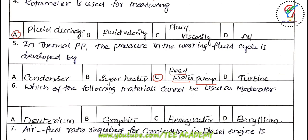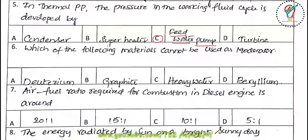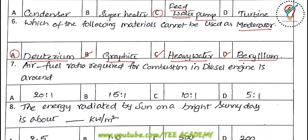Sixth question: which of the following materials cannot be used as a moderator? The options are deuterium, graphite, heavy water, and beryllium. The correct answer is deuterium — meaning graphite, heavy water, and beryllium can be used as moderators, but deuterium cannot.